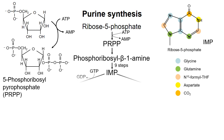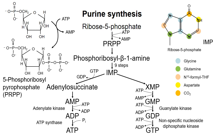From IMP, the pathway splits, with one branch leading to ATP and the other branch leading to GTP. Note that synthesis of AMP requires energy input from GTP, whereas synthesis of GMP requires energy from ATP. This helps keep the amounts of ATP and GTP in balance.